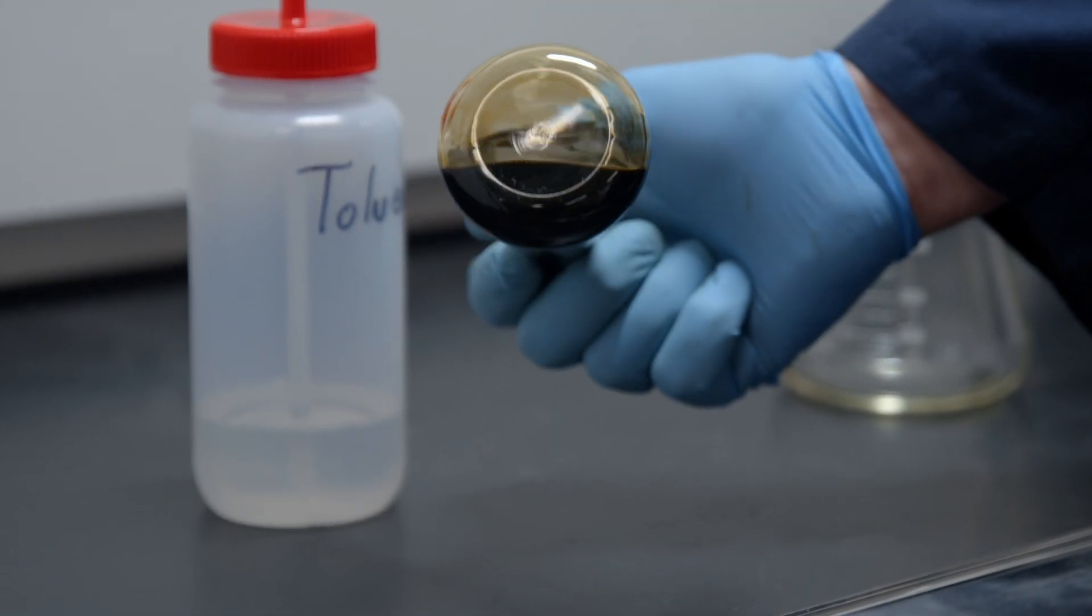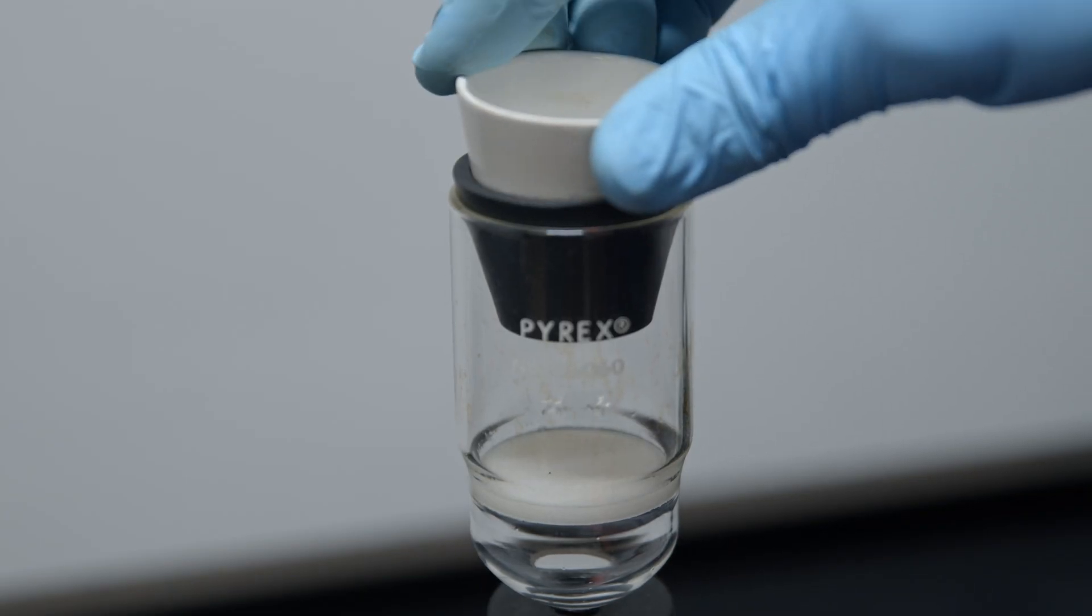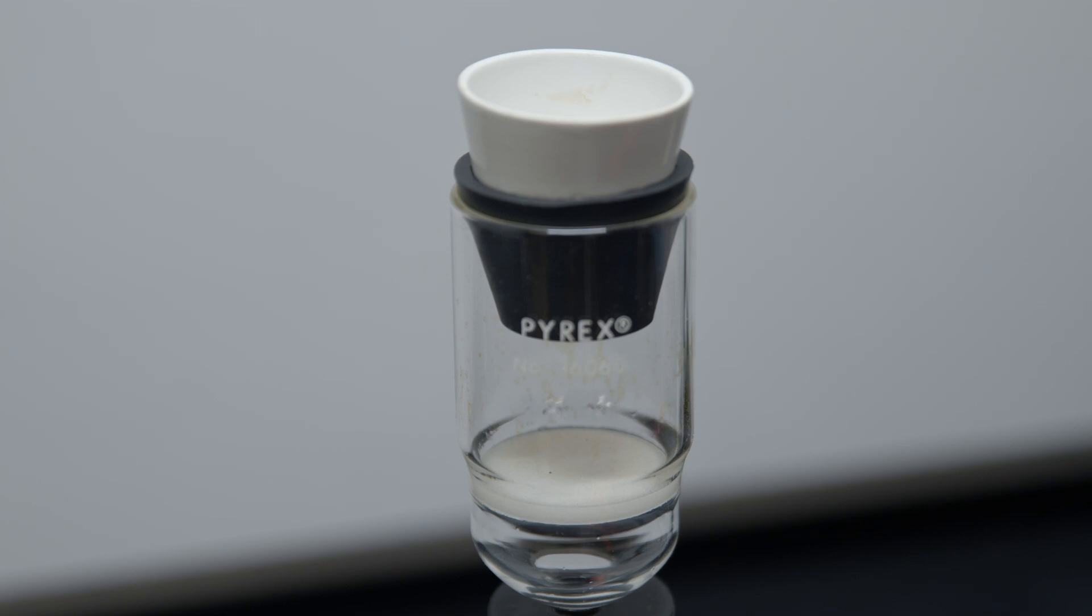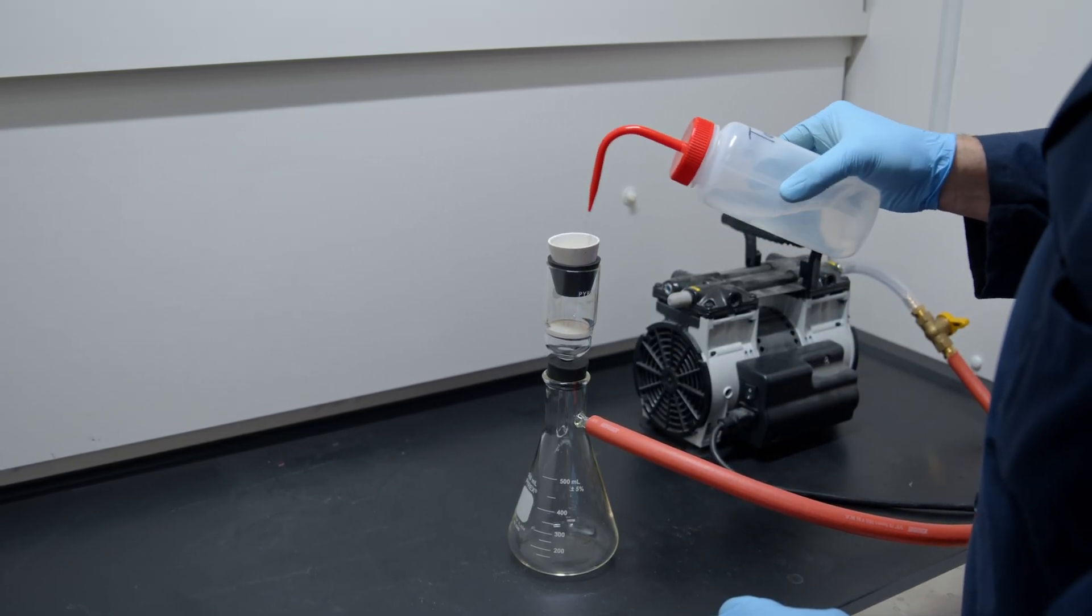No undissolved material is allowed to adhere to the container. Place the previously prepared crucible in the filtering tube. Moisten the filter pad with a small portion of clean solvent.